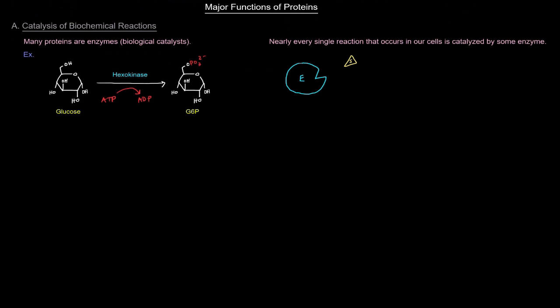First thing is catalysis of biochemical reactions. Many proteins are enzymes, which are just biological catalysts. Catalysts speed up chemical reactions. When those reactions are biological reactions, those catalysts are then called enzymes. And enzymes, many of them are proteins. In fact, pretty much all of them are proteins.